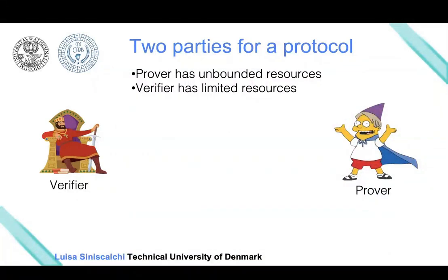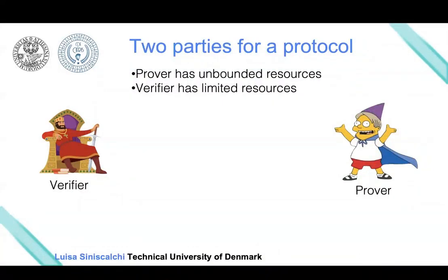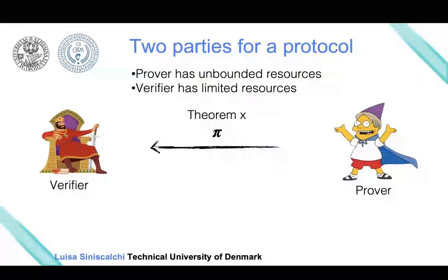The prover can be unbounded and have all the time he wants, while the verifier is assumed to be a polynomial time machine. A way that the prover has to prove the theorem to the verifier is by sending some messages or proof. After the proof is read by the verifier, the verifier can, on input the theorem, decide whether to accept or reject this proof.